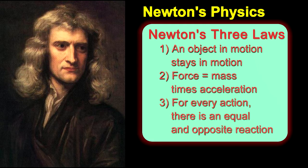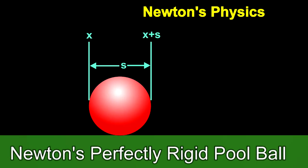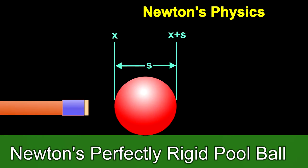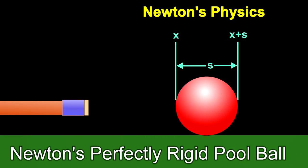Newton's world is mathematical, like this animation of a billiard ball being struck by a cue stick. The imaginary ball keeps its perfectly round shape as it moves off without friction.